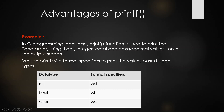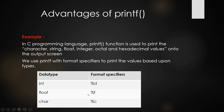In C programming, the printf function is used to print characters, strings, floats, integers, and hexadecimal values onto the output screen. We use printf with format specifiers to print values based on their types. For example, %d is for displaying int data type variables, and %f is for displaying float data type values.